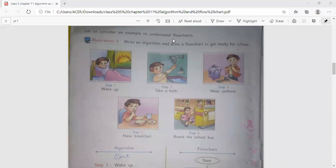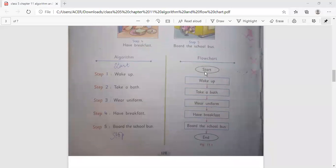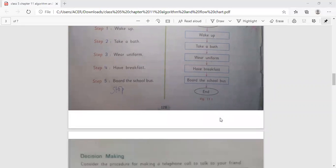Now let us consider the example of flowcharts. Write an algorithm and draw a flowchart to get ready for school. Here this illustration 3 you have to do it yourself. The flow: start, then wake up, take a bath, wear uniform, have breakfast, board the school bus, then end. Try to do it yourself.